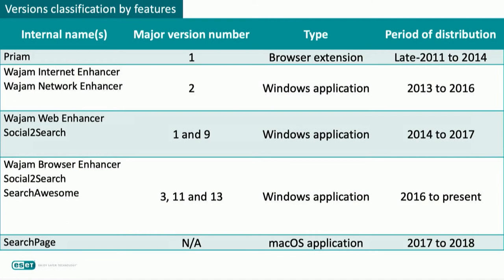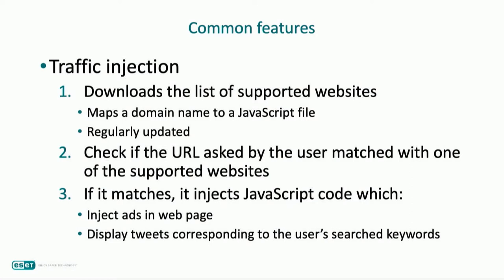We identified five different versions of WAJAM, regrouped by features and code base even when distributed under different names or version numbers: one browser extension called Priam, three different versions for Windows, and one for macOS distributed from 2017. The name WAJAM progressively disappeared and other names like Social2Search and SearchOrSum were used. Regarding features, each version ultimately does the same thing — it injects remote JavaScript code into the user's web traffic — but the difference between versions is the technique used to perform traffic interception.